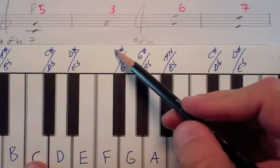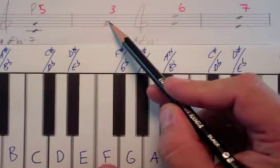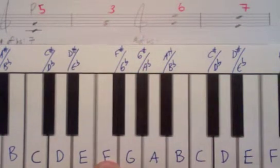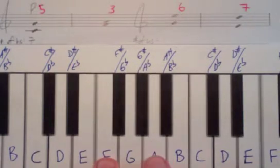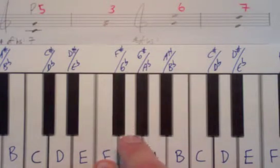Here we have the notes F and A. We're counting from F — it doesn't really matter what F we use on the keyboard, but this one's in the middle of the picture so that's what I'll use. We're counting from F to A, counting the half steps. Starting on F, counting the jumps: one, two, three, four.